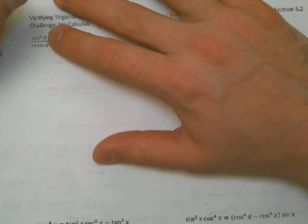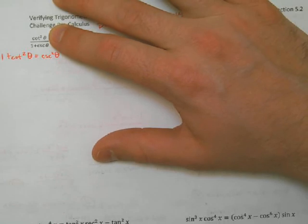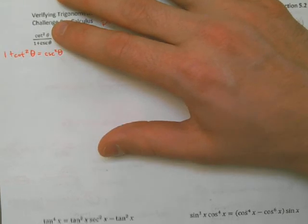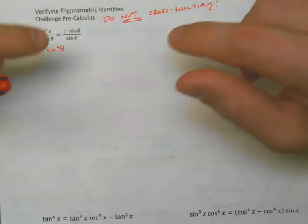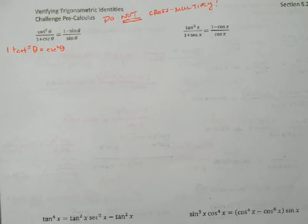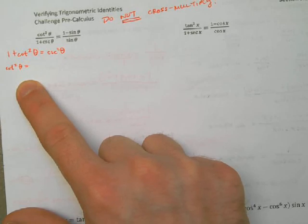I should note: when you're verifying trigonometric identities, you need to work with one side of the equation at a time, which means we do not cross multiply. That is a big mistake — a lot of students do that. You do not cross multiply when doing proofs like this. On the left side, those two terms cancel and I'm left with cosecant of theta minus 1. I need to show that equals 1 minus sine theta over sine theta.